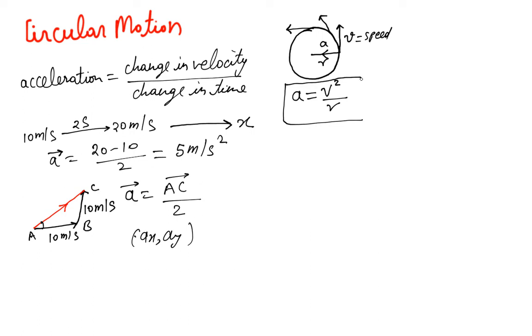Now we said a change in velocity is caused by some acceleration and this is the acceleration. Now acceleration is caused by a force, we know that F equals ma, so unless there is a force we cannot have acceleration. So what is causing this acceleration?